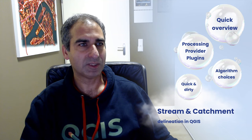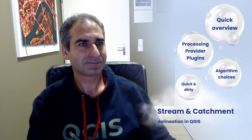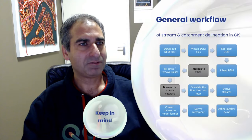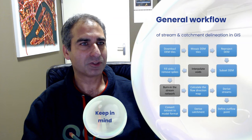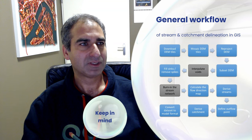Next, I'll discuss the concept of processing provider plugins and the choices that you have. If that's all too complicated, skim to the end of this video where I'll give tips to do the stream and catchment delineation quick and dirty. But first, let's have a look at the general workflow for stream and catchment delineation in GIS, which is more or less the same for all tools.